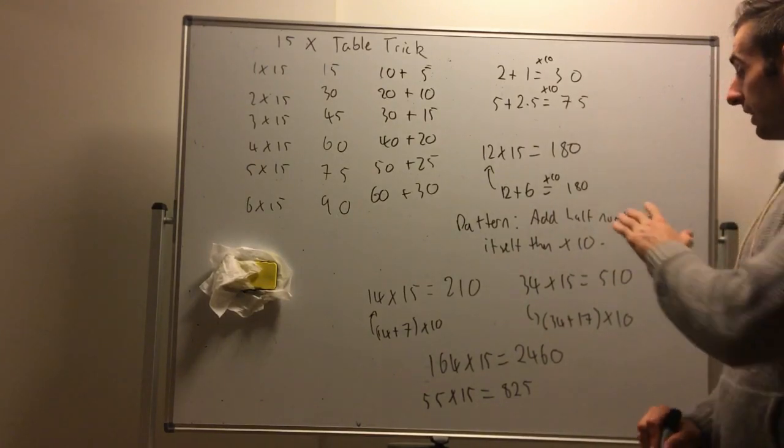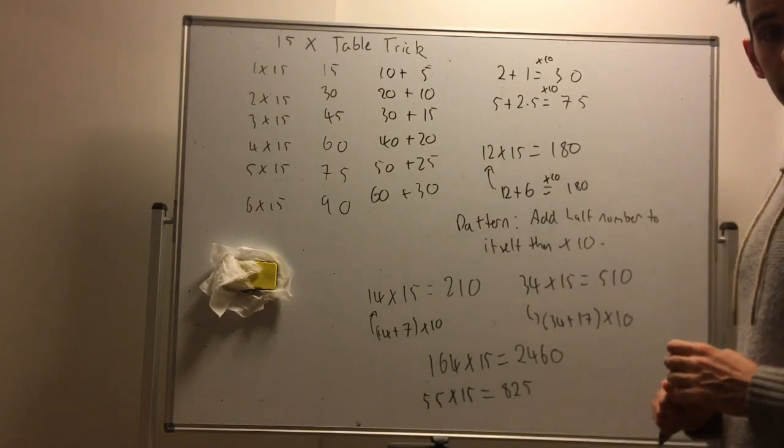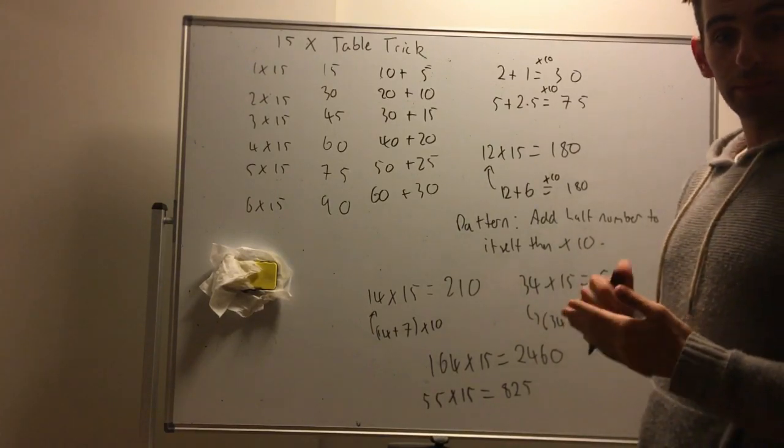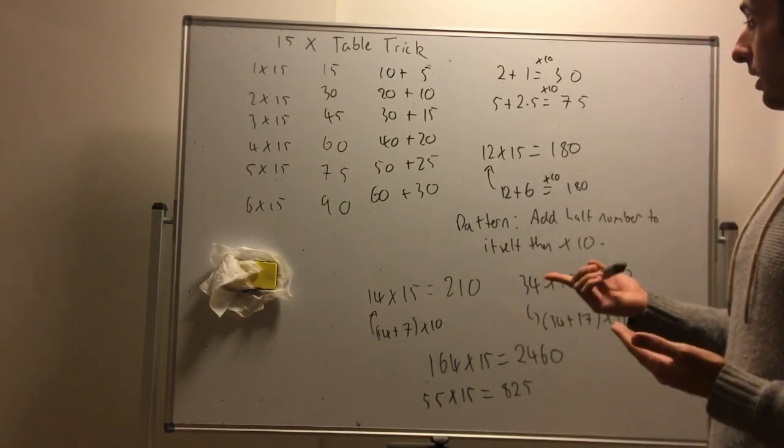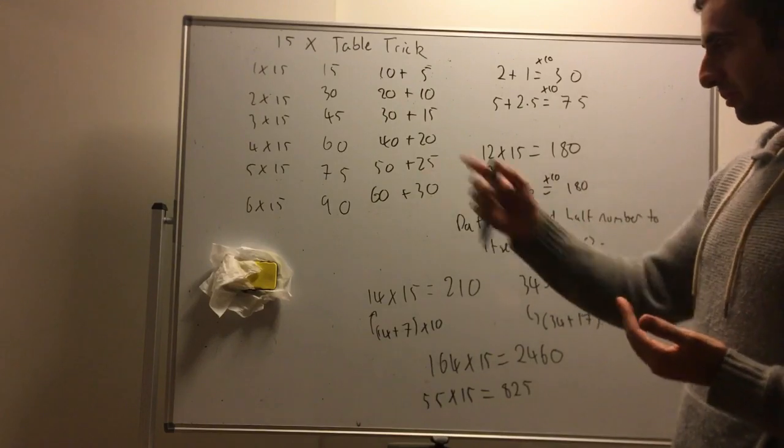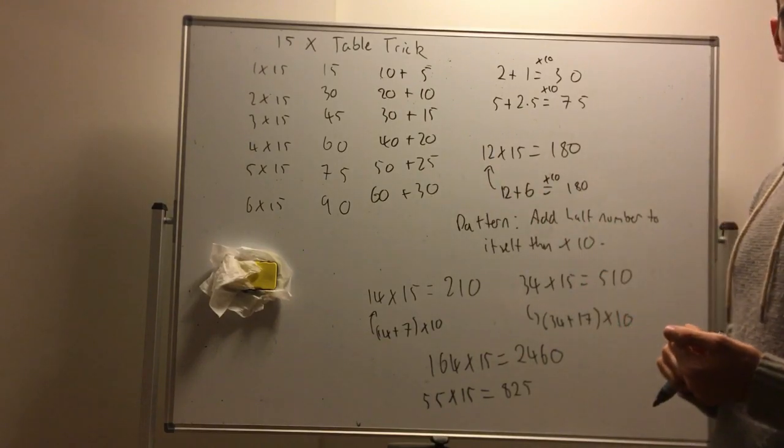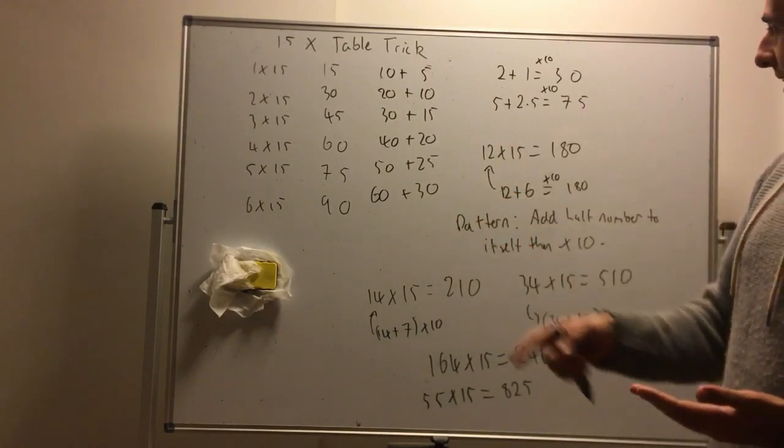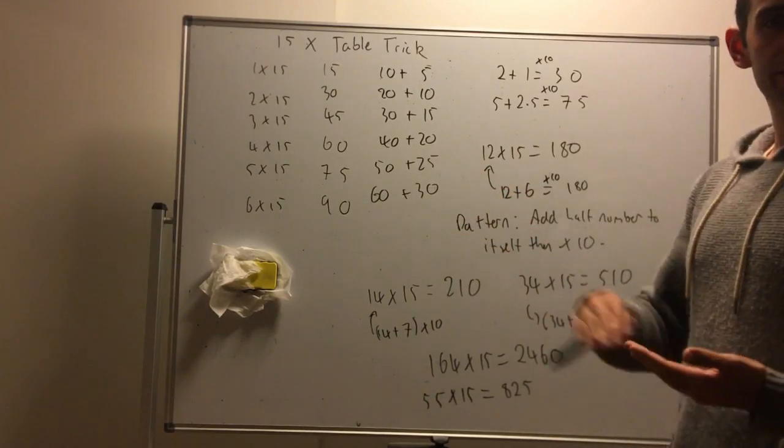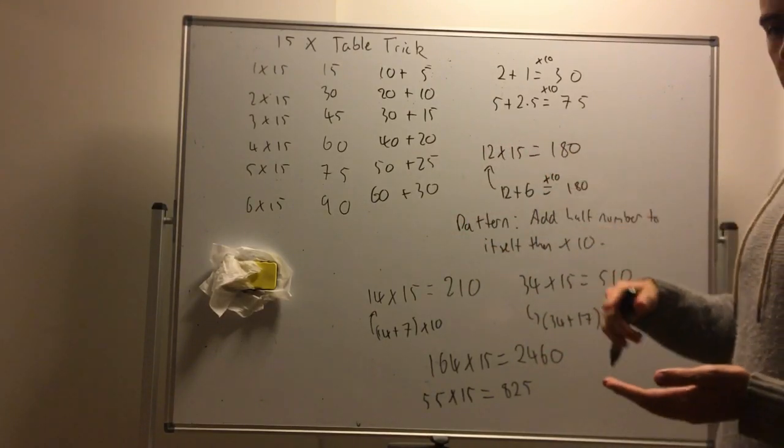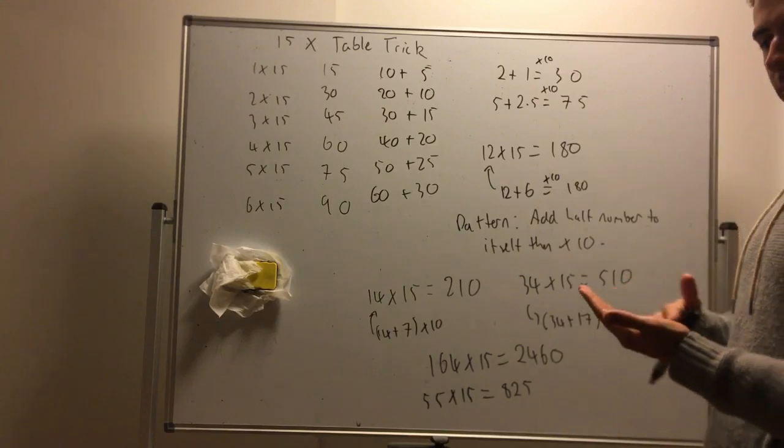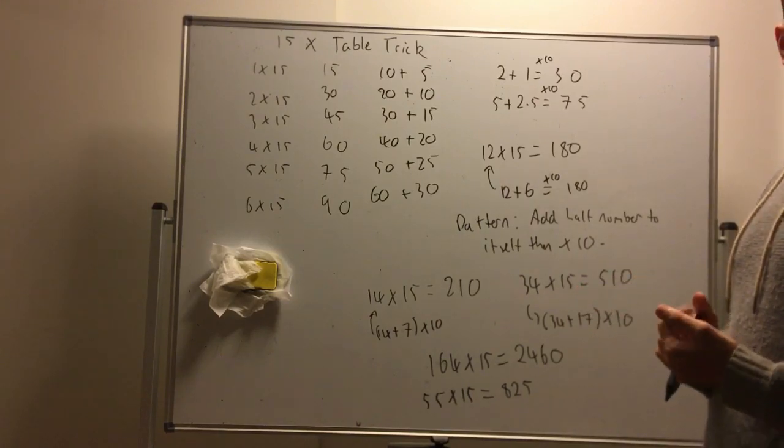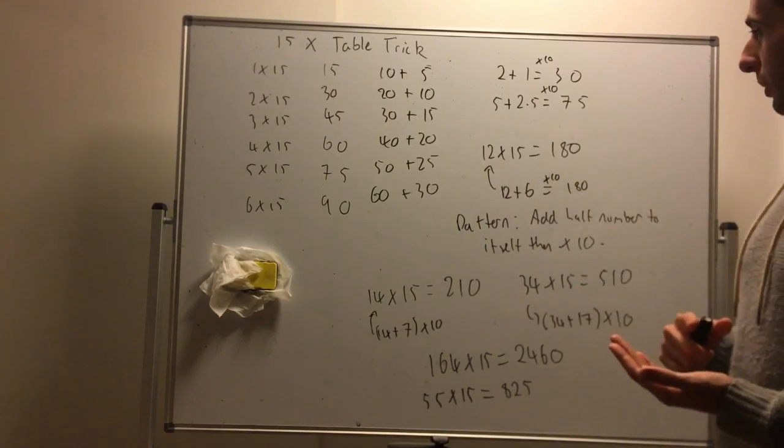So I hope you found this trick for times 15 simple and I've tried to apply it. The best way to apply it is now, so what you can try is pick some small numbers. Let's go. So I've done 1 to 6 here. Just do the rest of 7 to 15. Knowing your 15 times tables from 1 to 15 is very useful.